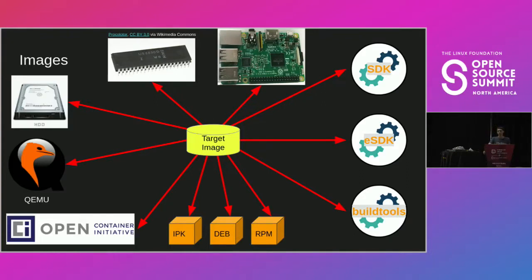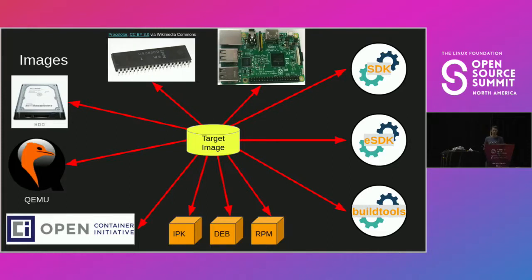There are also internal things we can generate. The SDK allows you to compile software against a given image — it provides compilers and tools to compile software for your target. We also have the extensible SDK, which is a more advanced version. And there's the BuildTools Tarball, which is really cool for supply chain reasons, and I'll talk about that at the very end of my presentation.